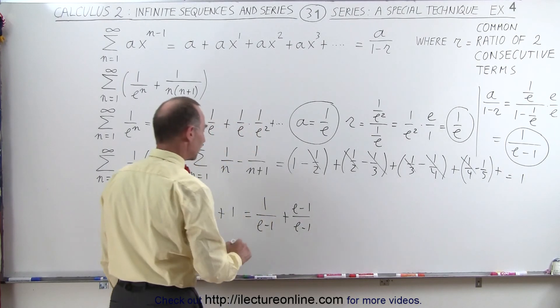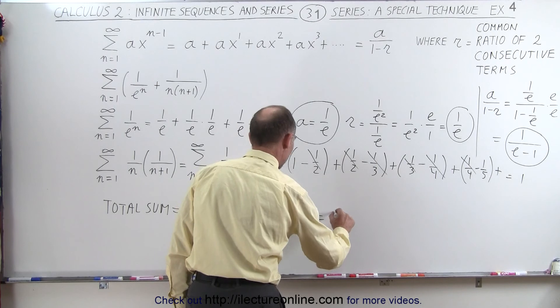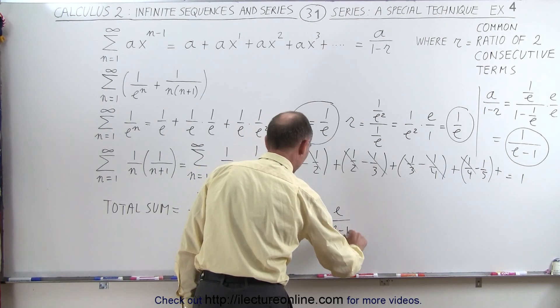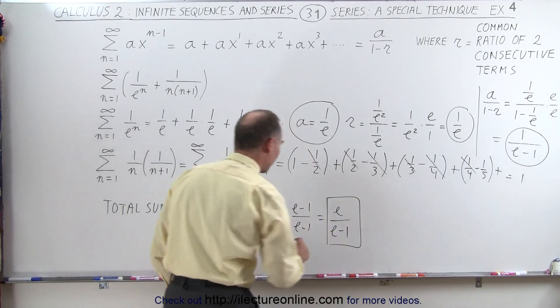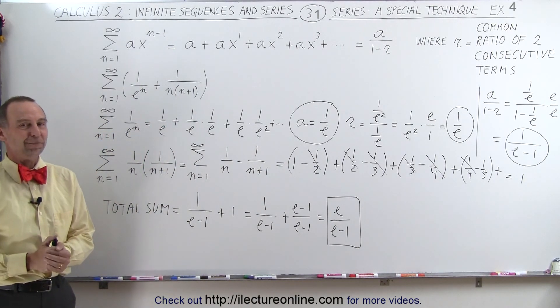So 1 minus 1 is 0, so we get e divided by e minus 1 as being the total sum of that initial infinite series. And that's how it's done.